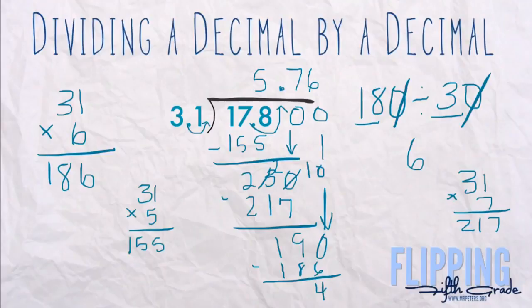So again, when dividing a decimal by a decimal, the things you need to do are: first move the decimal place in the divisor, however many times you do that you must move it in the dividend and drag it right up to the top. That way you don't forget about it later, and then you treat the problem like a normal long division problem.